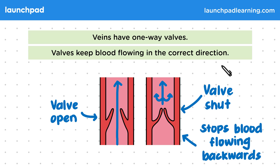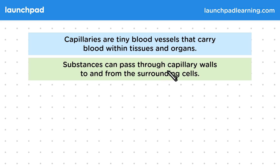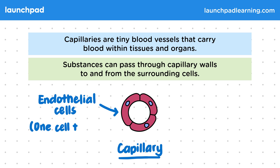So lastly, what is the role of the capillaries? Capillaries are tiny blood vessels that carry blood within tissues and organs. There are billions and billions of capillaries in the body. Substances can pass through capillary walls to and from the surrounding cells. This diagram shows a cross-section of a capillary. Capillary walls are very thin, made up of endothelial cells one cell thick. This blood vessel doesn't have the same wall of elastic and muscular tissue as the veins and arteries. The endothelial cells form a single layer that lines the blood vessels and they regulate exchanges between the bloodstream and surrounding tissues.